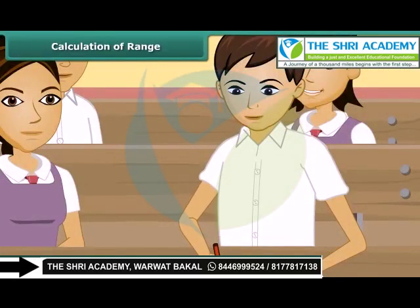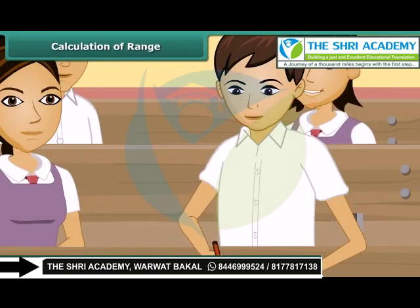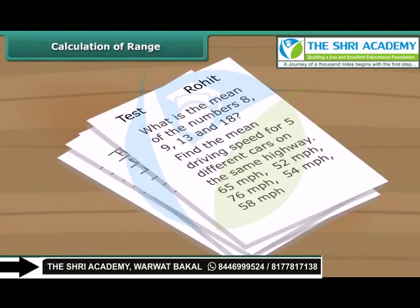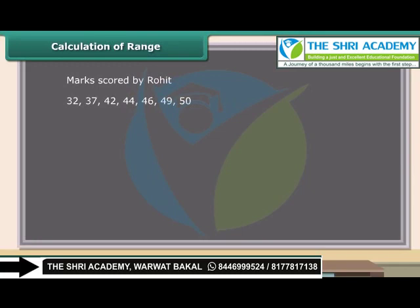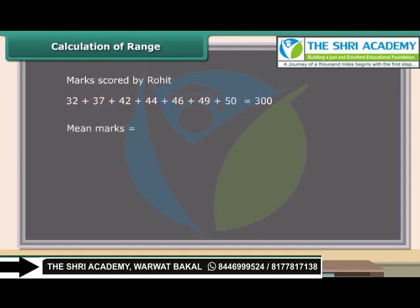Rohit is an intelligent and very studious boy in the class. He gave his maths test 7 times to improve his marks. The data shown here displays the marks scored by Rohit. Can you calculate the mean test marks of Rohit? Let us first add up the marks — the sum is 300. We know he gave the maths test 7 times. So the mean marks of Rohit are equal to 300 divided by 7, which is equal to 42.86.